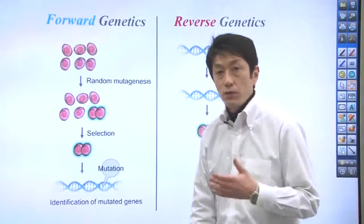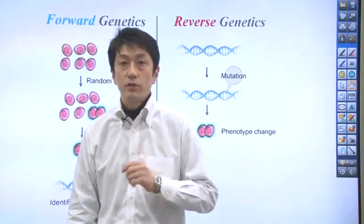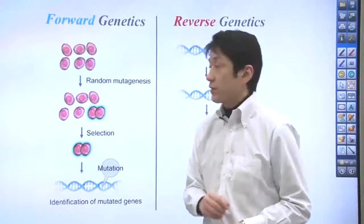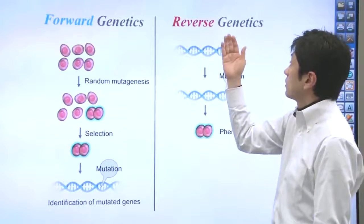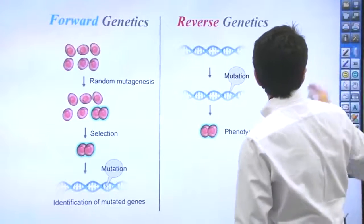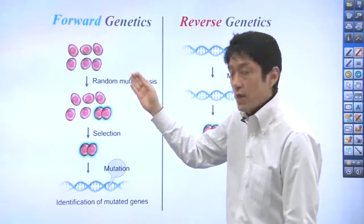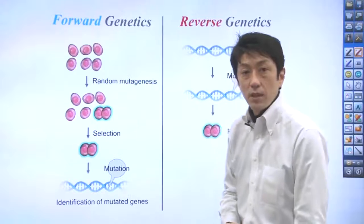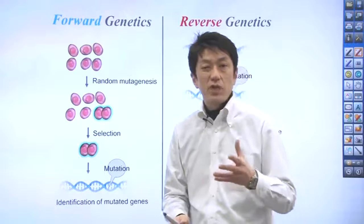Before I talk about the concept of chemical genetics, I need to explain how genetics works. There are two approaches in genetics: forward genetics and reverse genetics. Forward genetics starts with introducing random mutations into cells. The mutant cells are screened for a phenotype of interest.